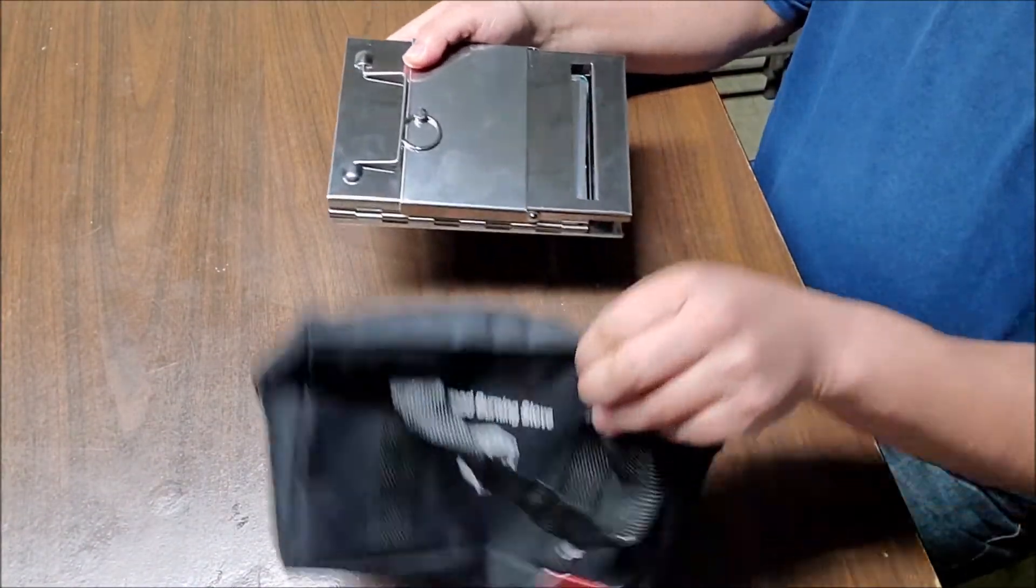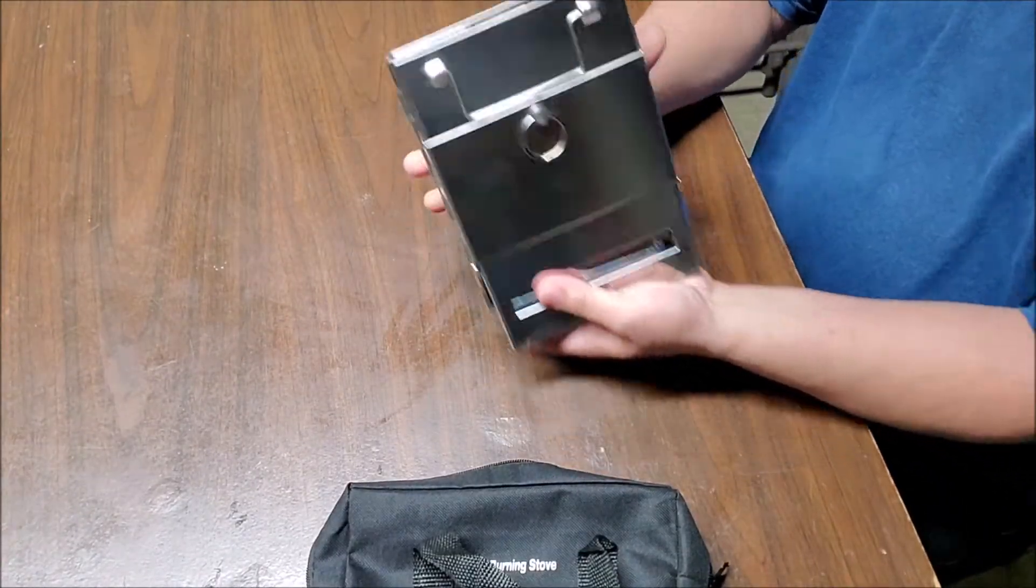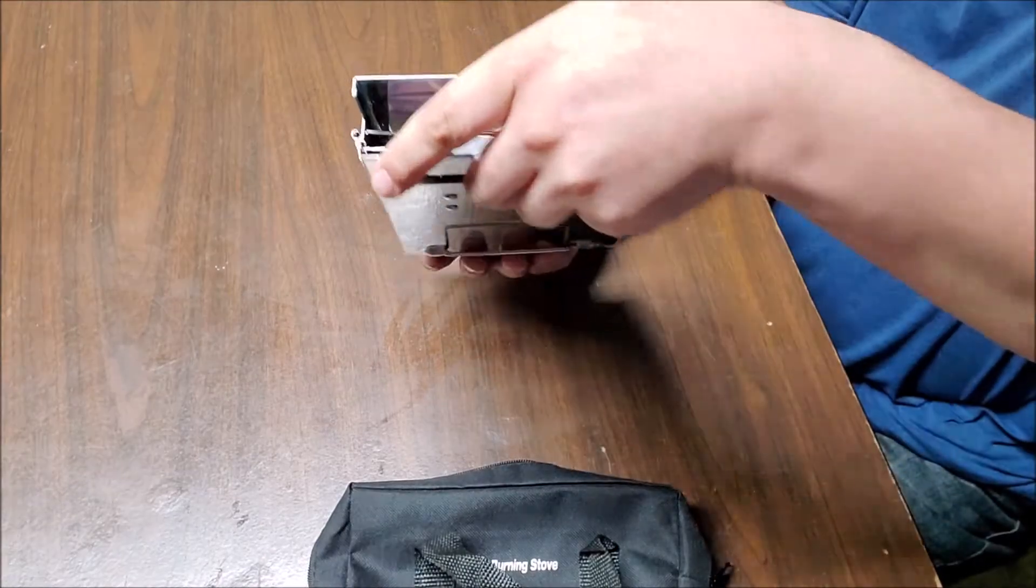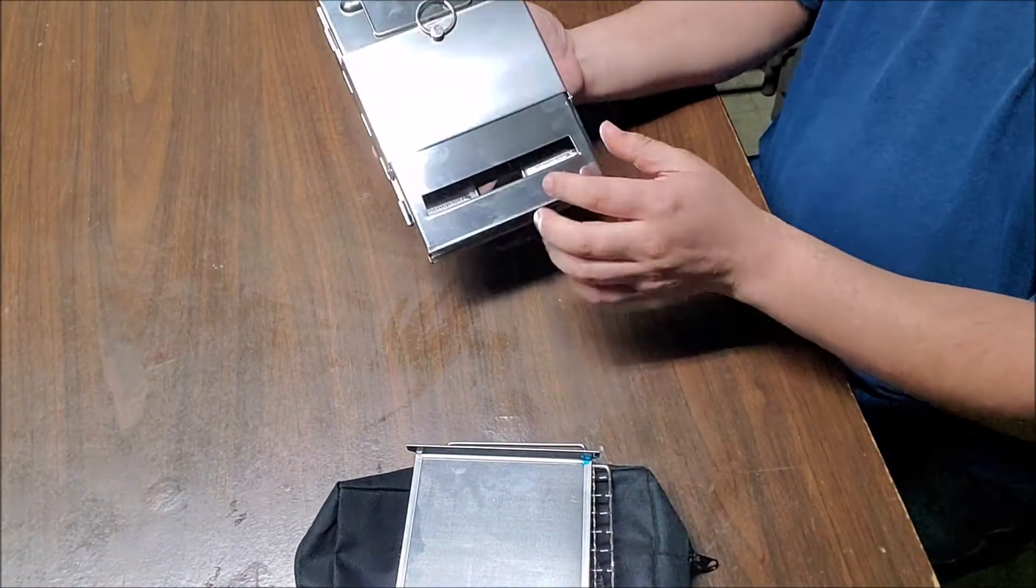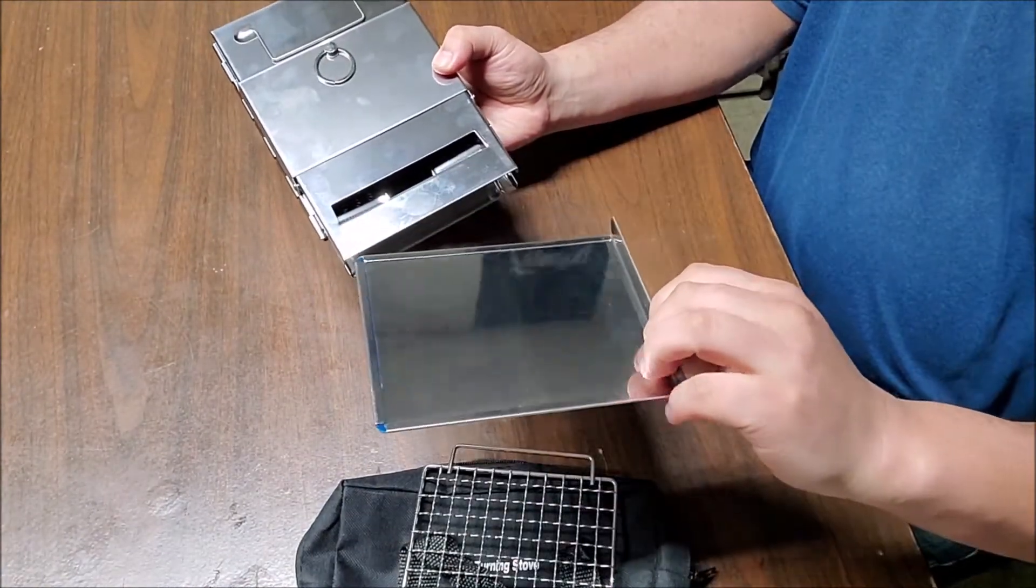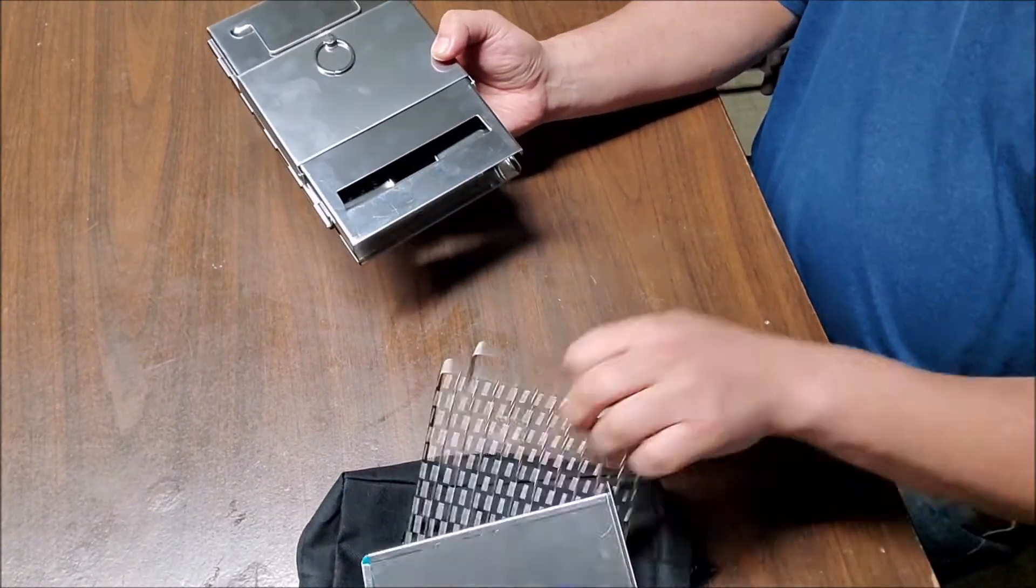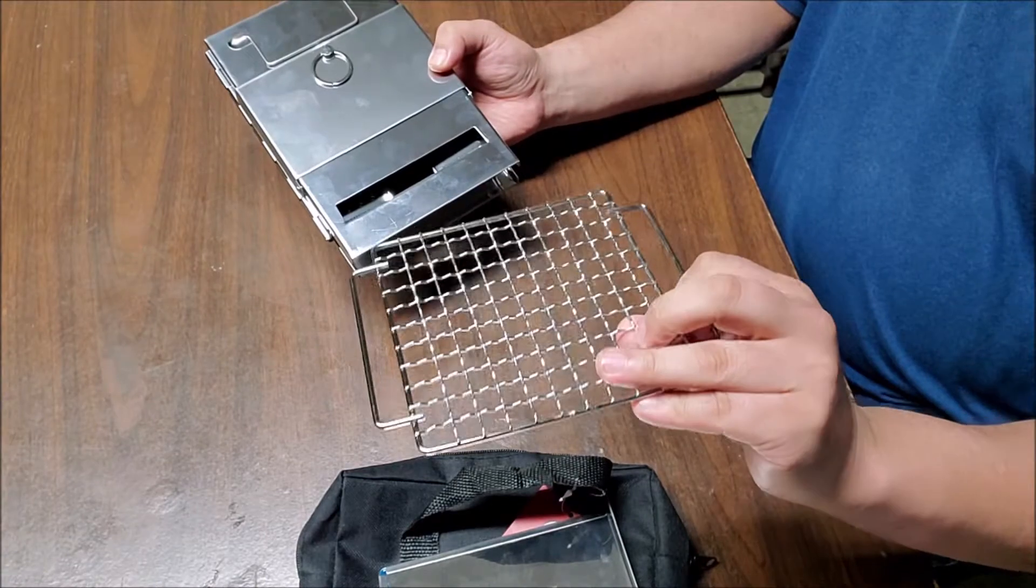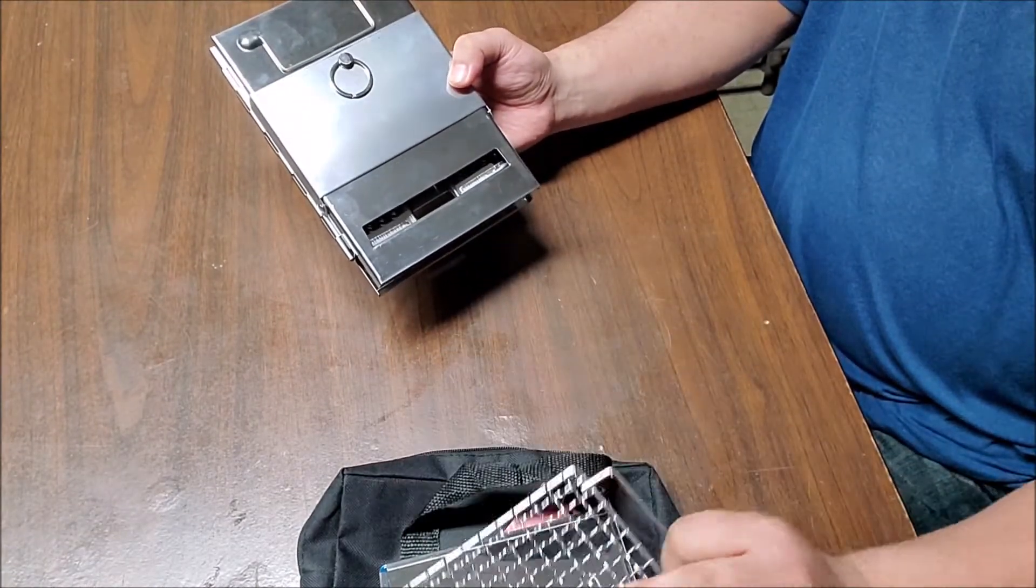Okay, it comes with this carrying case. It comes with the actual box, I'm assuming this is the tray for catching ash, and this is actually a top portion of the grill where you can cook on it.